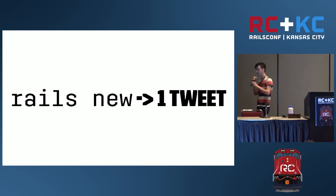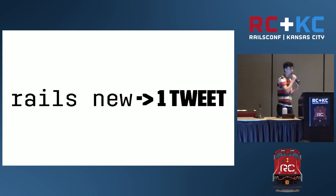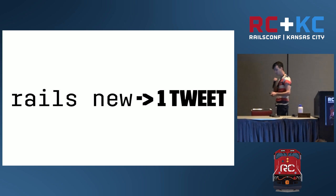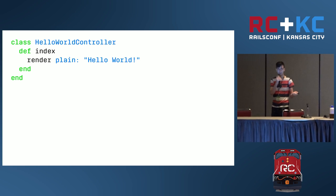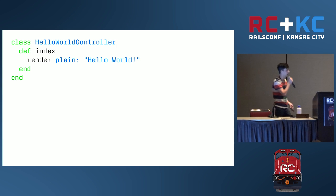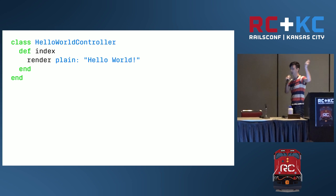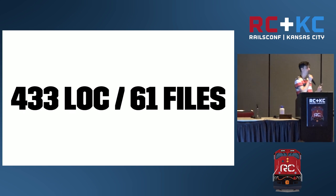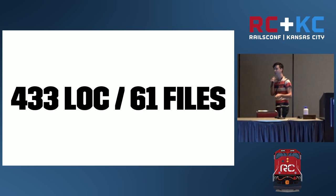That doesn't necessarily mean that Rails can't be simple or lightweight. So what we're going to do in this talk is take the file structure and boilerplate from a 'rails new' command and basically hack it all off until we get down to 140 characters. The first thing we do after we type 'rails new' is add a controller. Our app has to actually do something. I'm going to add a hello world controller that renders 'hello world' in plain text. And I've got to add a route in config/routes.rb. At this point we have 433 lines of code generated by Rails new, spread over 61 unique files.